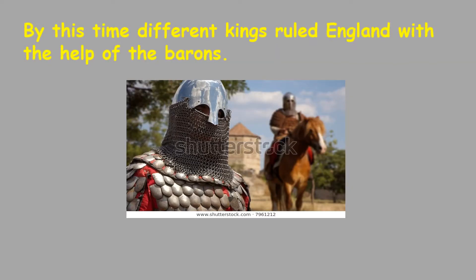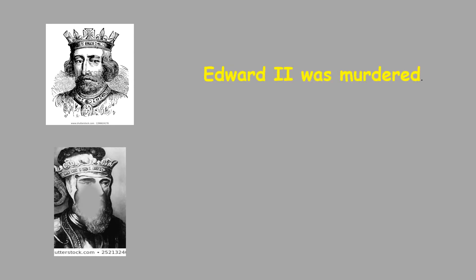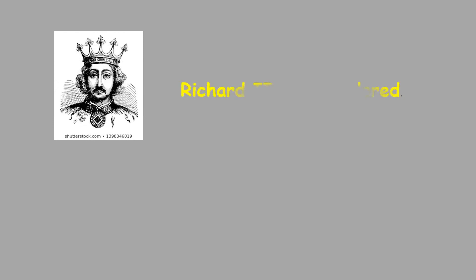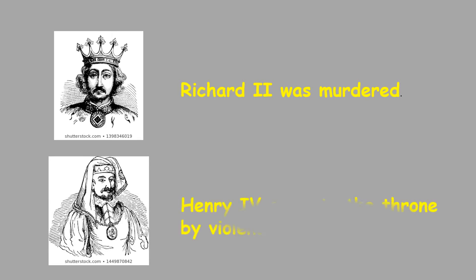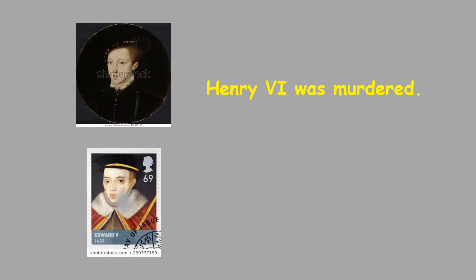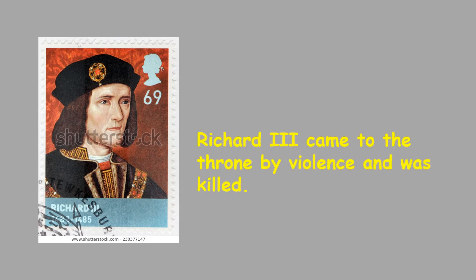By this time, different kings ruled England with the help of the barons. Some kings were murdered and some others came to the throne by violence. Edward II, for example, was murdered. Edward III came to the throne by violence. Richard II was murdered. Henry IV came to the throne by violence as well, followed by Henry VI who was murdered. And at last Edward V was murdered too. Richard III came to the throne by violence and was killed at the very end.